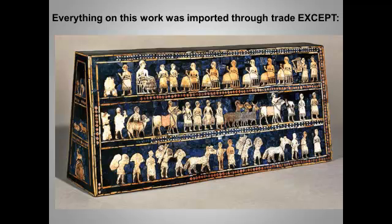Remember that the Mesopotamians were heavily dependent on trade. They produced a lot of valuable agricultural goods for sale, but they needed to import many items, including stone. What is the white stuff on this work, and where does it come from?